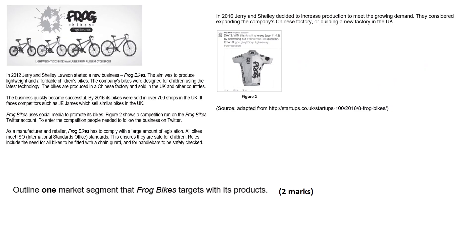Outline one market segment that Frog Bikes targets with its products. In 2012, Jerry and Shelley Lawson started Frog Bikes with the aim of producing lightweight and affordable children's bikes using the latest technology. The bikes are produced in a Chinese factory and sold in the UK and other countries. The business quickly became successful — by 2016, its bikes were sold in over 700 shops in the UK, where it faces competitors such as J.E. James which sells similar bikes.